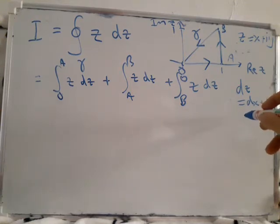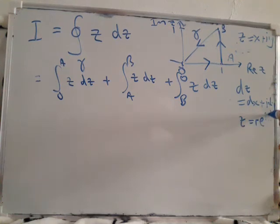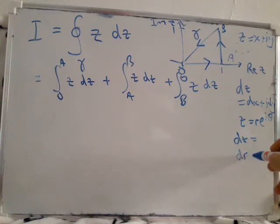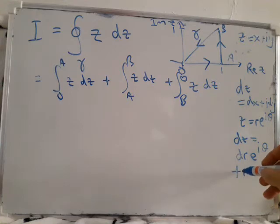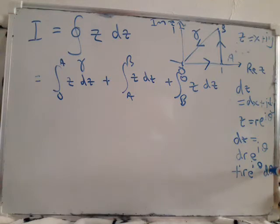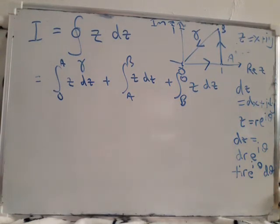For that matter, we'll use this later on. We can also write z equals r e^(iθ). So dz can also be written as dr times e^(iθ) plus r times i e^(iθ) dθ, if we differentiate with respect to theta. So we've got two possible versions of what dz can be.